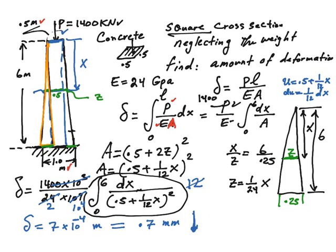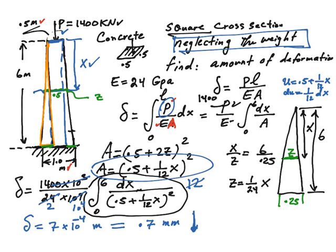Just remember that we did neglect the weight. If the weight is not neglected, weight is changing as a function of position also, so that will add another variable which has to be considered. But to make the problem simple and easy to solve, we just neglected the weight, so the only thing that was changing was the area, which I was able to get this expression for.